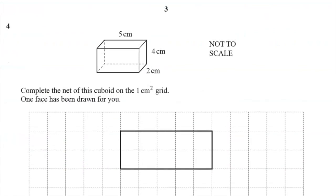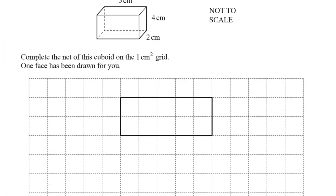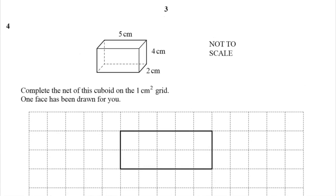Complete the net of this cuboid on the 1cm grid. One face has been drawn for you. Well, this looks like it's 1, 2, 3, 4, 5 by 2. I'm going to say that it's that bottom face here. Let's say it's that one. Maybe it's the top face. I don't know. It could be either of them.